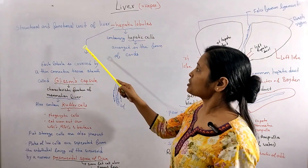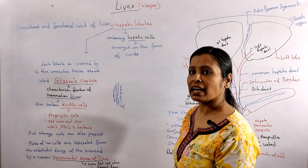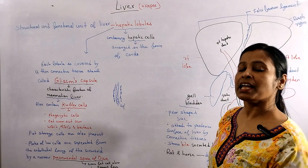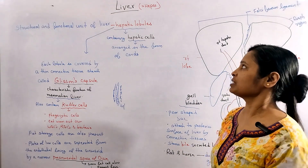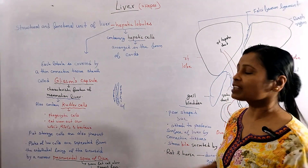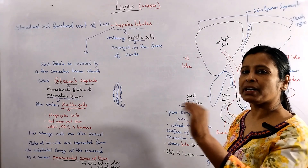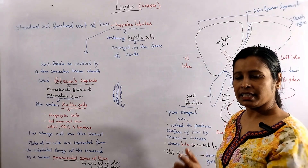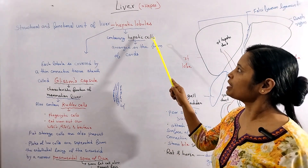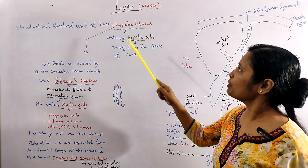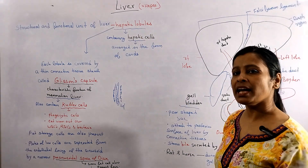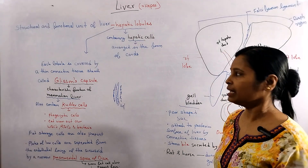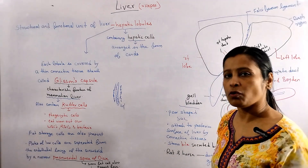What is the structural and functional unit of the liver? It is called the hepatic lobule. The hepatic lobule is made up of hepatic cells arranged in the form of cords. So the structural and functional unit of the liver is the hepatic lobule, and hepatic cells are arranged in cord form.